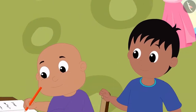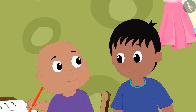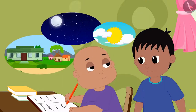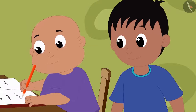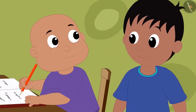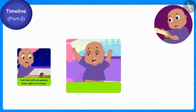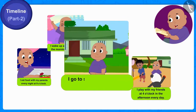When Raju asked him what he has been writing in that diary for so long, Babalu told him that he is writing about the tasks he does through the day. Raju got excited and asked Babalu to read what he has written. Babalu started reading: I eat food with my parents every night at 9 o'clock. I wake up at 8 o'clock in the morning every day. I play with my friends at 4 o'clock in the afternoon every day. I go to school at 9 o'clock in the morning every day.